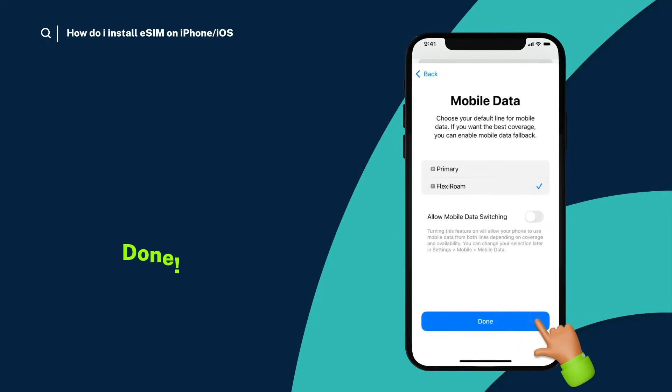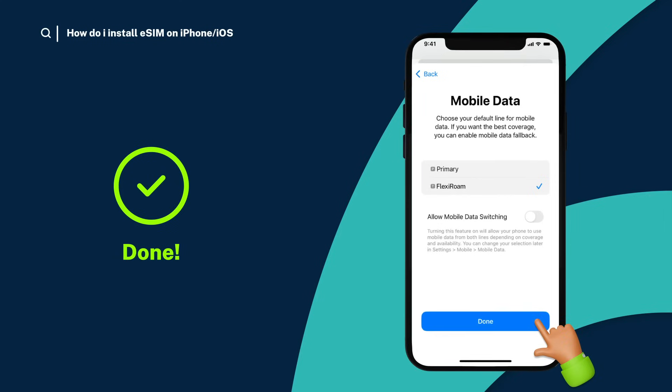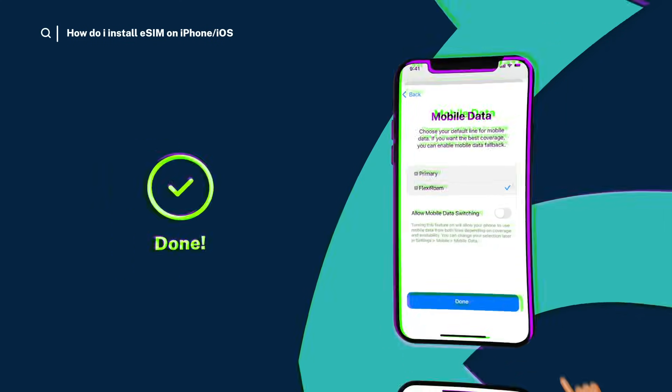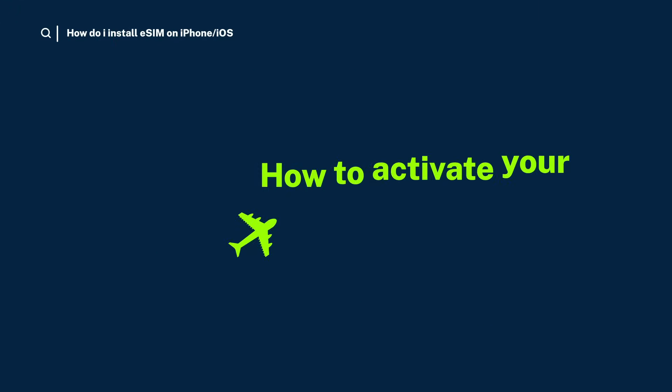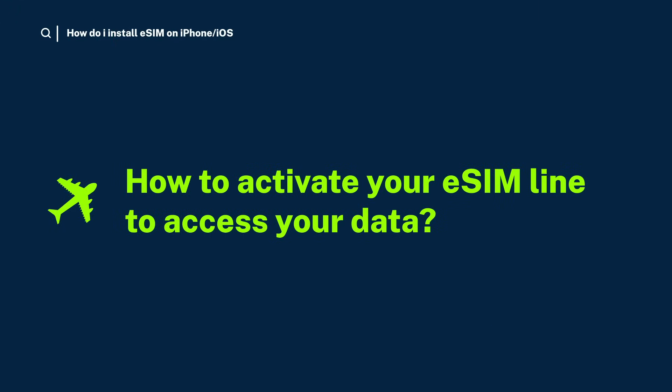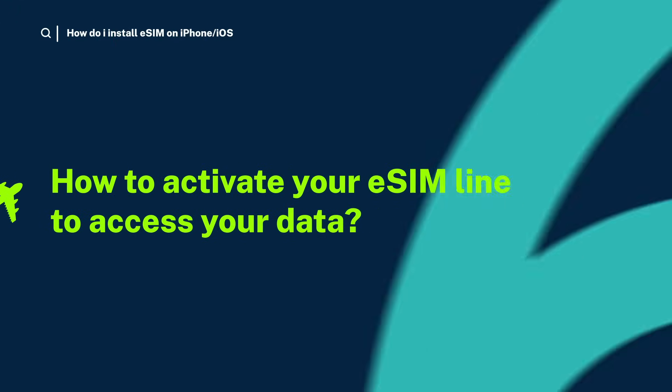And you're done. You've successfully installed your eSIM. When you arrive at your destination, you can activate your eSIM line to access your data. Here's how.